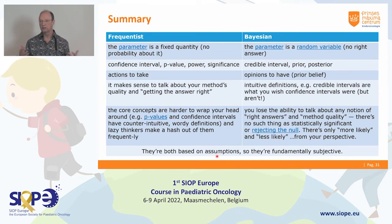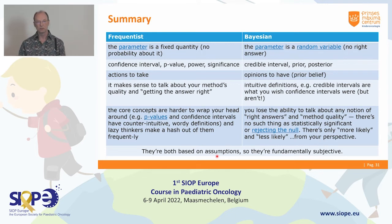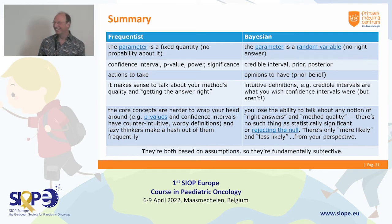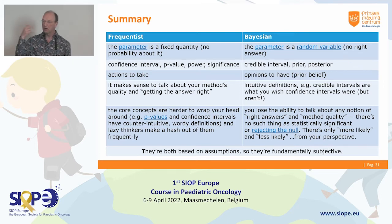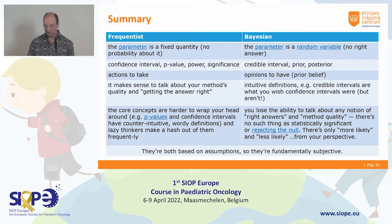With this knowledge, we go to the continual reassessment design. You can already hear in the title that continual reassessment means this learning process is very much the thing. It was introduced in 1990. It makes use of an a priori dose-toxicity curve and assumes a desired toxicity rate chosen in advance — still a target toxicity level.